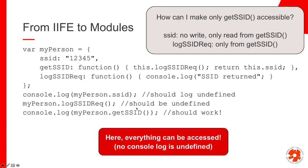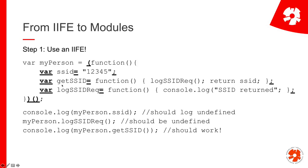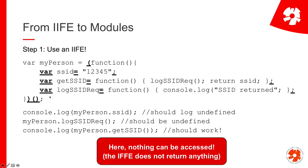The first step is to use an IIFE - what we just learned. I wrap my code: instead of an object, I define a function where I define all three things - my attribute and my two functions - and I wrap the entire function definition in an IIFE. What happens is: as soon as this code gets parsed, this function gets executed and whatever is returned is assigned to myPerson. The problem is nothing can be accessed because our function does not return anything, which means it returns undefined. So myPerson will actually be undefined. In the previous case I could access everything, now I can access nothing - that's also not very useful.